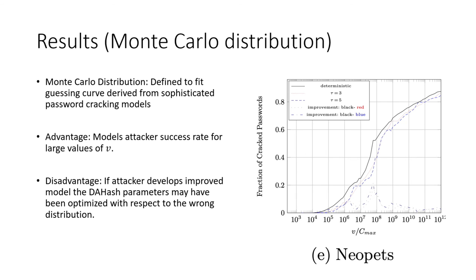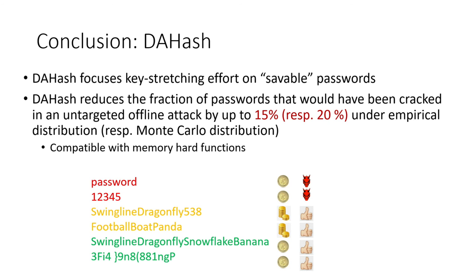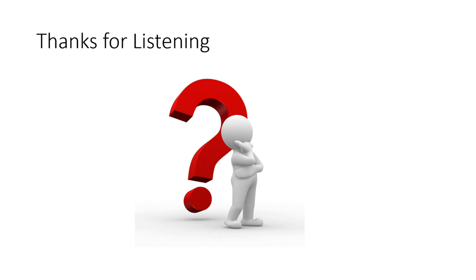For Monte Carlo distributions, we can evaluate at much larger value-to-cost ratios and see similar improvements — a 20% reduction in cracked passwords when using DAHash. In conclusion, DAHash reduces the fraction of cracked passwords by focusing key stretching on passwords that are saveable. DAHash reduces cracked passwords by up to 15% or 20% depending on the distribution used, and it is compatible with modern hashing algorithms like memory-hard functions. Thank you — I look forward to taking questions at Financial Cryptography.